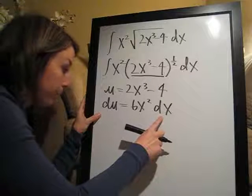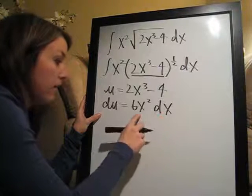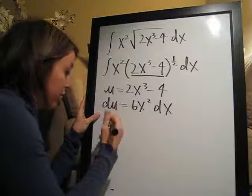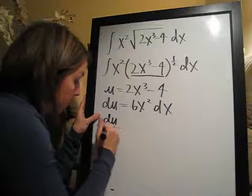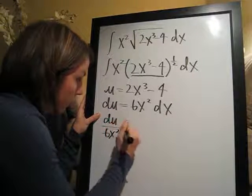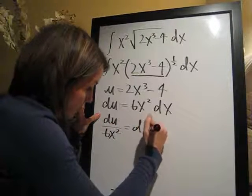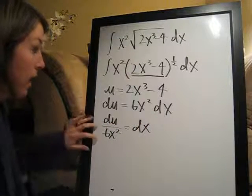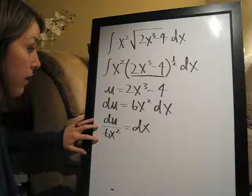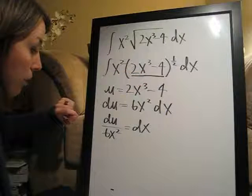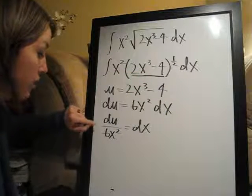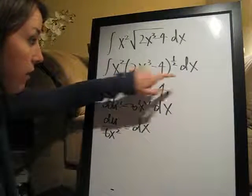So now we're going to solve for dx by dividing both sides by 6x squared to move this over. So it's going to end up being du over 6x squared equals dx. Now that we have that, we can plug u in for 2x to the third minus 4, and we can plug du over 6x squared in for dx.